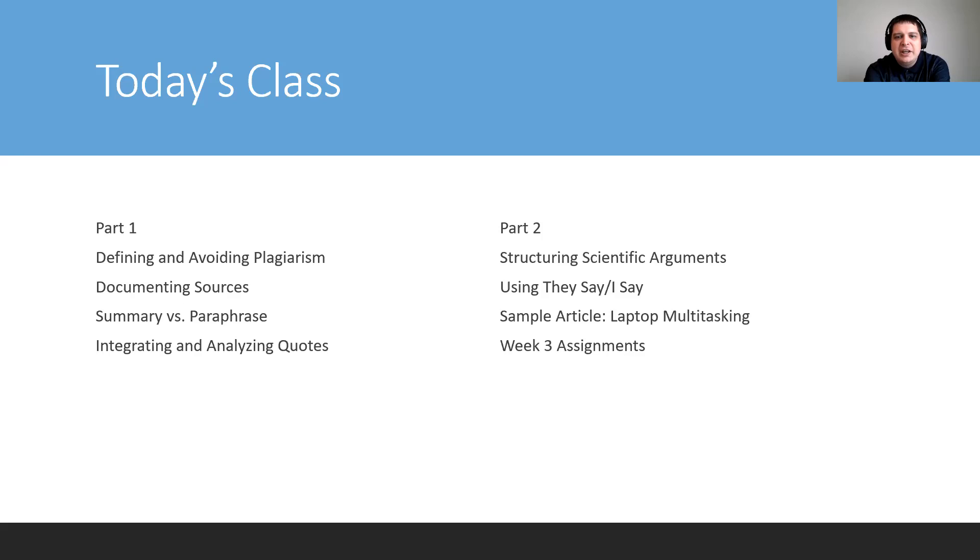In part one, I'm going to engage that both in terms of ethics, we're going to talk about how to define and avoid plagiarism, including the procedures for that process in Cal State system. I'm going to show you how to document your sources specifically. And I'm going to talk a little bit about using these three main kinds of evidence in your academic papers: summaries, paraphrases, and quotes.